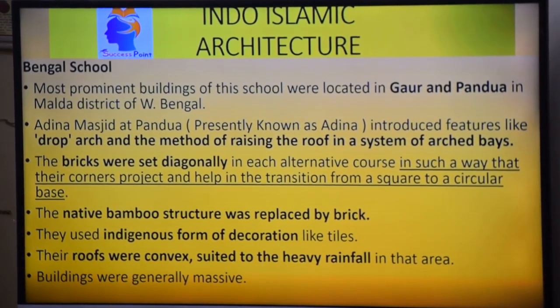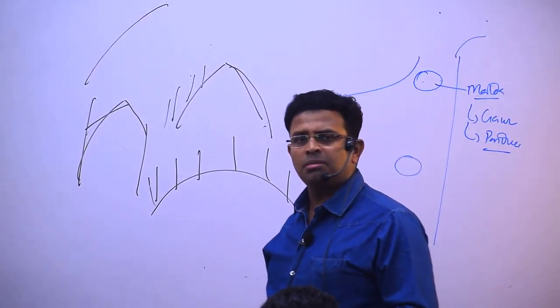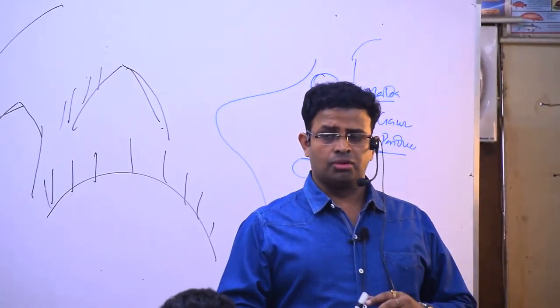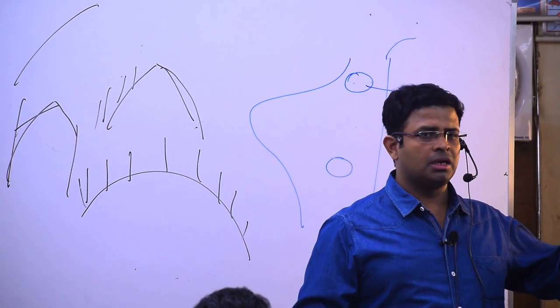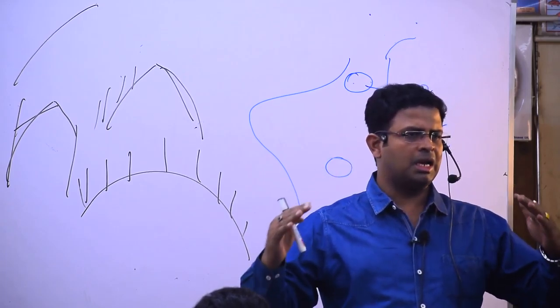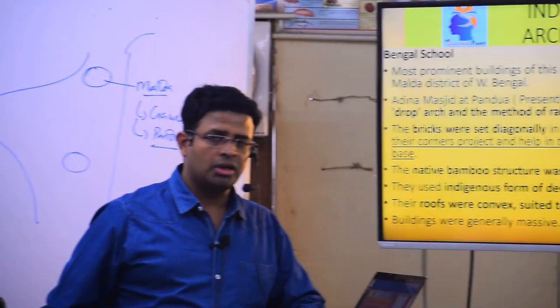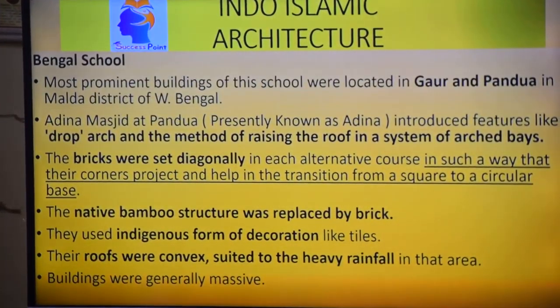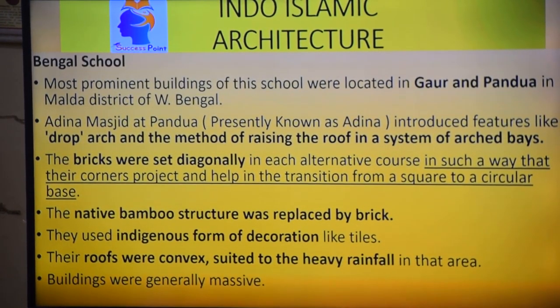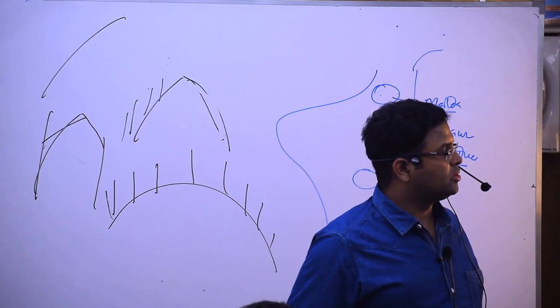So which is the famous region in Bengal? Malda. In Malda, which are the two? Gaur and Pandua. In Pandua there is Adina, and Adina Masjid has which kind of arch? Drop arch. And we can see the bamboo has been replaced with brick. Bricks are made in such a way it looks like circular brick. And indigenous form of decoration, which are they using? Bengalis use tiles. And the roofs are which shape? Convex.